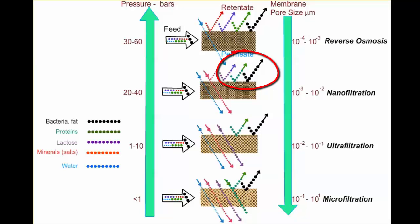Nanofiltration will also separate lactose, which is smaller than proteins, bacteria, and fat. Reverse osmosis allows only water to permeate through, separating all other components. Even the smallest salt molecules are separated by reverse osmosis.